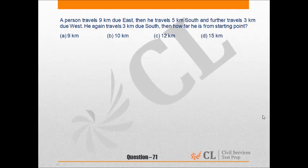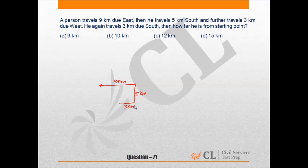Let us look at question number 71. A person travels 9 km due east. It is the starting point. Then he travels 5 km south, then further travels 3 km due west — that is 3 km. He again travels 3 km due south — that is 3 km.